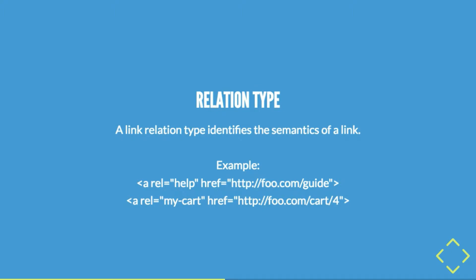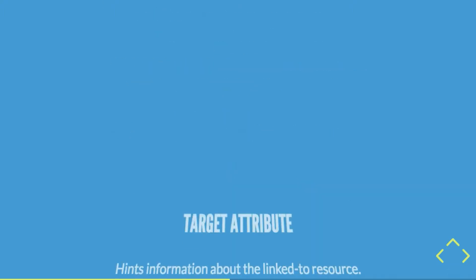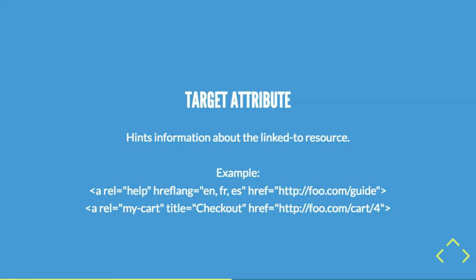A link relation type identifies the semantics of a link — what's the relationship this link represents? For example, on some page providing a guide, the rel attribute says 'help' — this is where you get help for this page. Another example: 'my cart' — this is the thing that goes to my cart whether I'm Joe, Bob, or Sally. My cart remains the same, but the link can change. A target attribute hints information about the linked resource — hreflang says this resource is available in English, French, and Spanish. The title attribute can say 'checkout,' which you might use as button text.